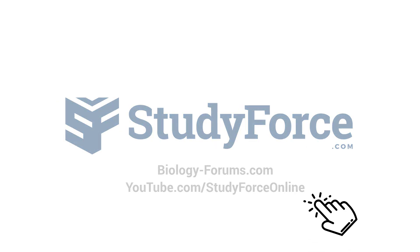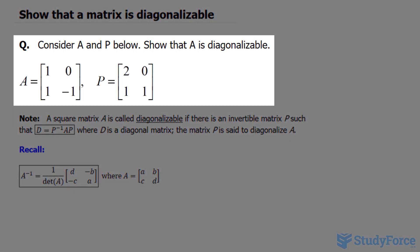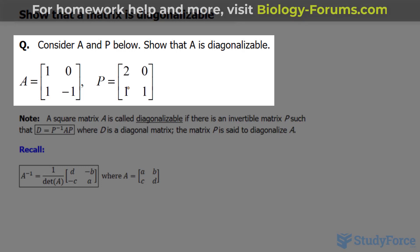In this lesson, I'll demonstrate how you can show that a matrix is diagonalizable. The question reads, consider A and P below. There are two by two matrices. Show that A is diagonalizable.